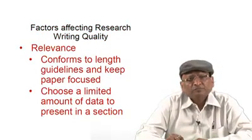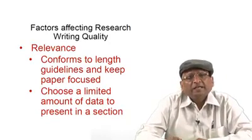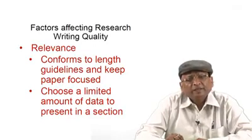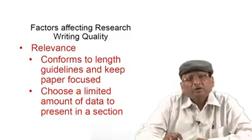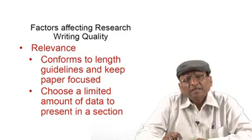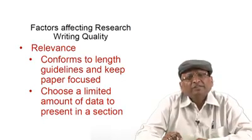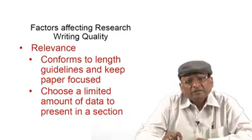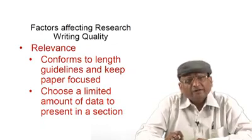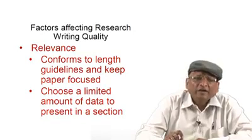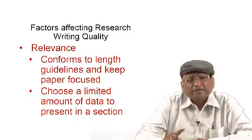The third point is relevance. We have to see the journal guidelines or the guidelines prescribed by a conference, and we should focus on and conform to those guidelines. For example, if the guideline sets a 3,000-word limit, we should limit our research paper within that limit. It has been observed that when we write the research paper we often do not see the limitation. Every data is important to you, but you have to select only what is required or essential for defining or explaining the result of your paper.